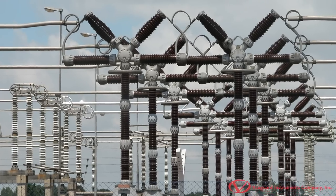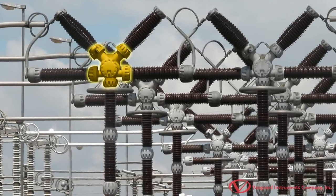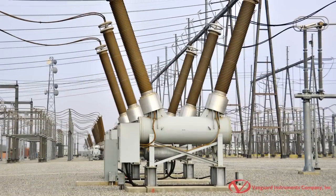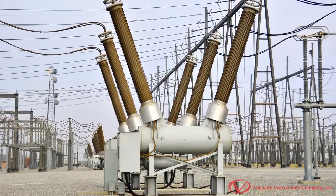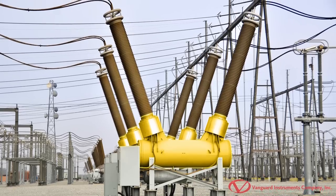Live tank breakers use a switching device in which the vessel housing the interrupter is at a potential above ground. Dead tank breakers use a switching device in which a vessel at ground potential surrounds and contains the interrupter and the insulating media.